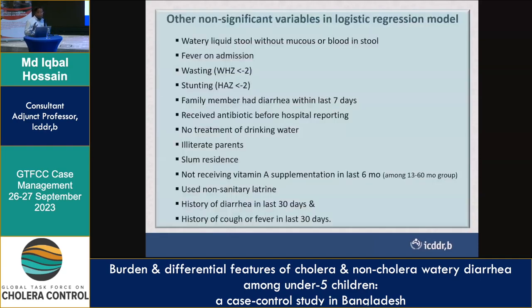Other variables were significant in bivariate analysis but not in the logistic regression model. These included: watery or liquid stool without mucus or blood, fever, wasting, stunting, family member having diarrhea within the last 7 days, receiving antibiotics before hospital reporting, no treatment of drinking water, illiterate parents, slum residents, not receiving Vitamin A for children aged 1 to 5 years, using non-sanitary latrines, history of diarrhea in the last 30 days excluding the current episode, and history of cough or fever in the last 30 days.